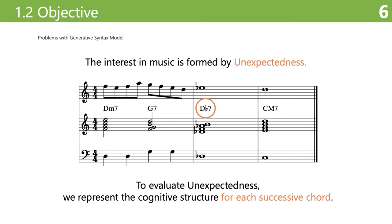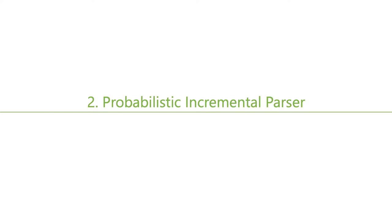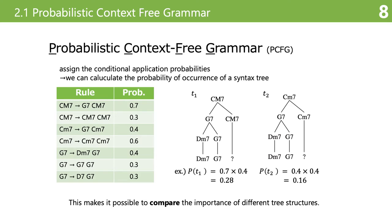Next, I want to talk about the method to achieve this: the probabilistic incremental parsing. First, I'd like to talk about the probabilistic context-free grammar. The grammar set up in the original ZSM does not have the concept of probability, so it is not possible to compare multiple parse trees that appear during the parsing process. Therefore, we have extended the ZSM grammar to PCFG. In PCFG, each syntactic rule is assigned a conditional application probability. This makes it possible to compute the probability of occurrence of the entire parse tree and to compare parse trees with each other.